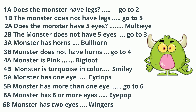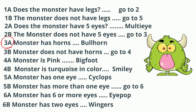I always start at 2a: 'does the monster have five eyes?' — no. So 2b says the monster does not have five eyes — okay, that qualifies, so I go to 3. 3a says 'monster has horns' — yes, so the monster's name is Bullhorn.